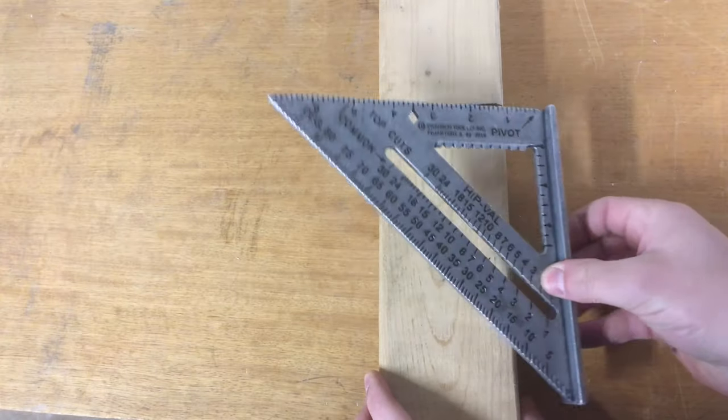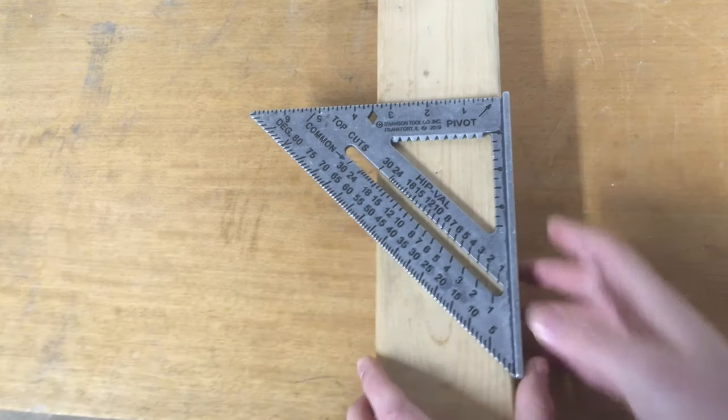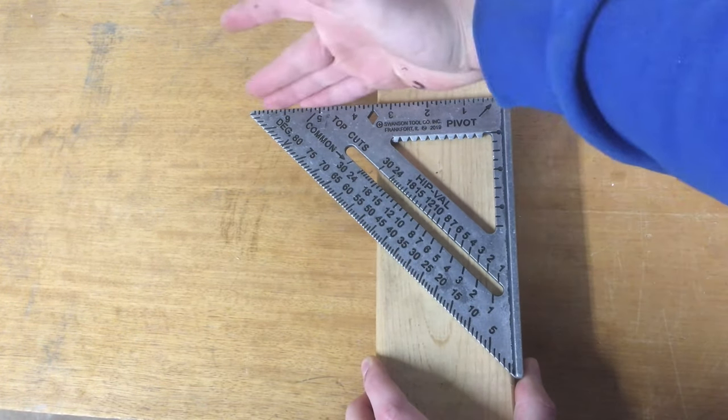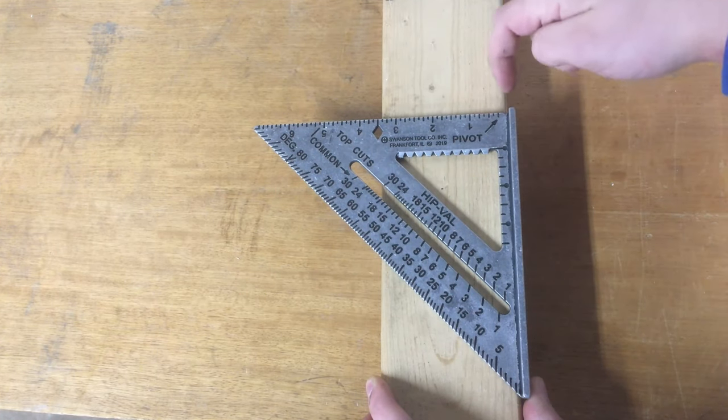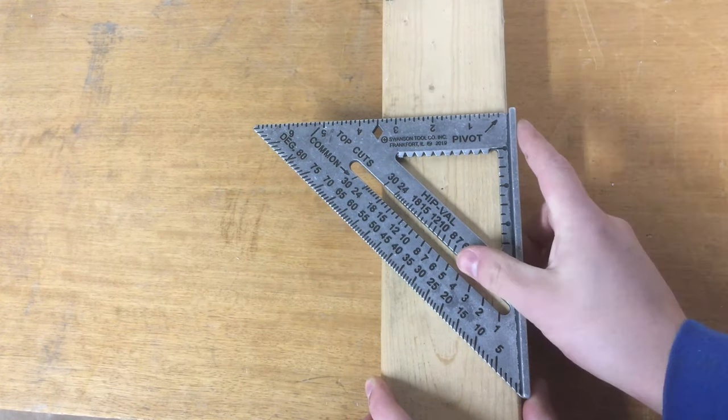The speed square has a ledge to get you flat up against boards, is 90 degrees square on these two edges, has inch markings on this edge, and when you make angle cuts, you pivot where it says pivot on this corner.